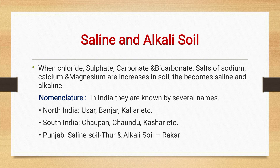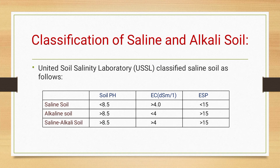What is the classification of saline and alkali soil? The United Soil Salinity Laboratory (USSL) classified saline soil as follows. They classified it into three parts: saline soil, alkaline soil, and saline-alkali soil. With the help of these characteristics, you can easily identify these three soils.